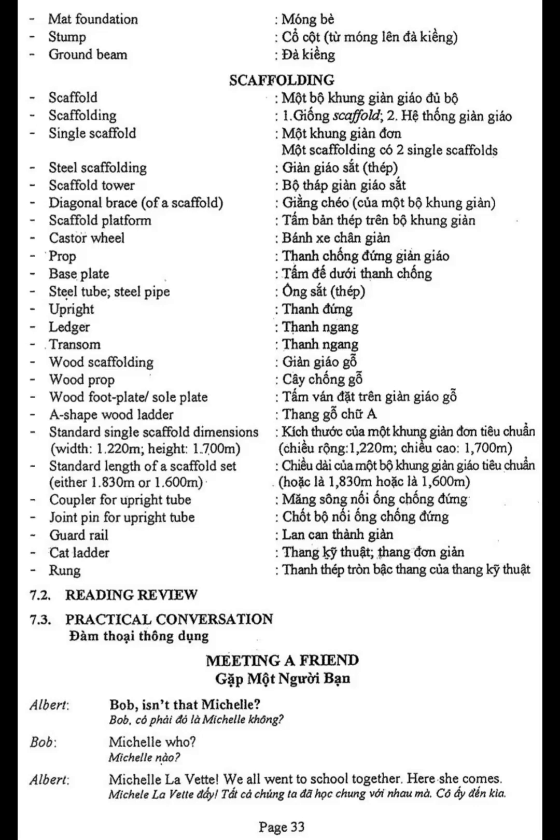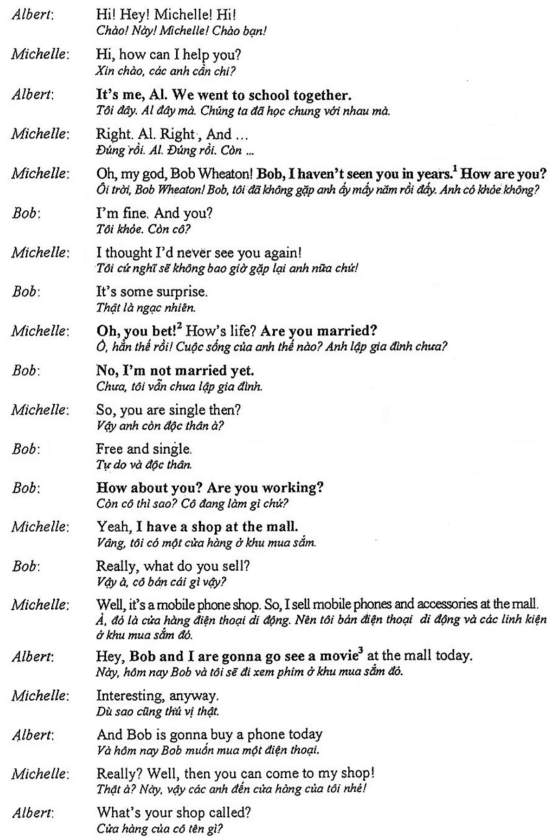Section 7.2 reading review. Section 7.3 practical conversation: meeting a friend. Bob: Isn't that Michelle? Michelle who? Michelle Levet — we all went to school together. Here she comes! Hi! Hey Michelle, hi. How can I help you? It's me, Al. We went to school together, right? Al, right?